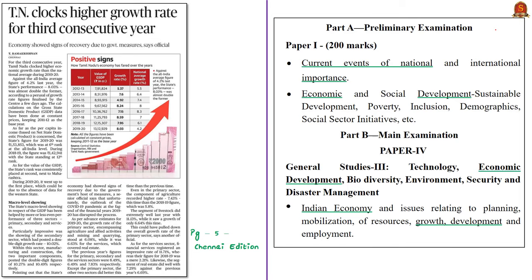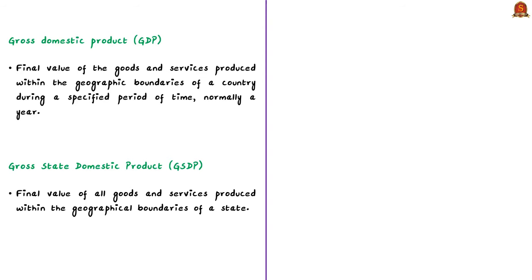Let's move on to the next news article, which reports that the state of Tamil Nadu registered a higher growth rate for the third consecutive year. In this context, we are going to compare the national growth rates with the state of Tamil Nadu growth rates. The syllabus relevant to the analysis of this news article is highlighted here for your reference. Before discussing this news article, we should know the difference between gross domestic product and gross state domestic product. Gross domestic product — GDP — is the final value of goods and services produced within the geographical boundaries of a country or a given state.